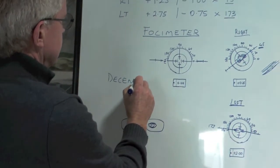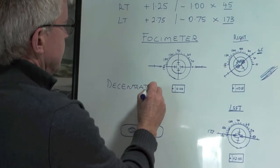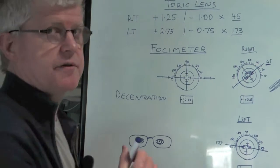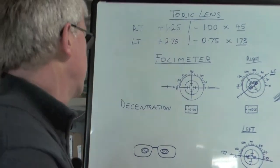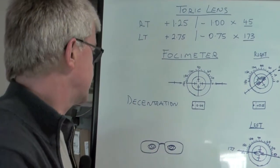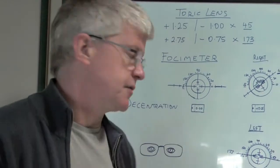Decentration. Very few people actually look through the very center of the lenses on a pair of glasses. So we need to work out how we have to decenter lenses to make the optical centers, to put the optical centers in the right place.